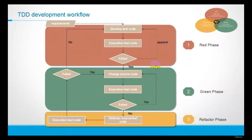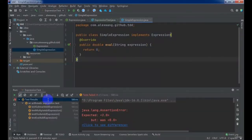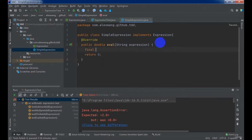From this workflow diagram, we found all test case execution failed. So we need to change the source code or implement the new requirements to let the test code execute successfully. Let's implement the EVAL method. This is the first version — it's pretty simple and very easy to implement. We just split the expression literal by operator.